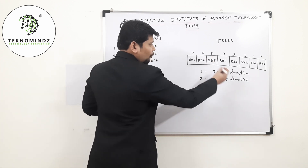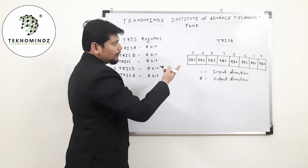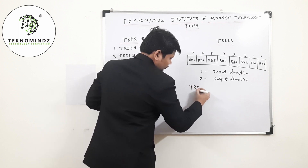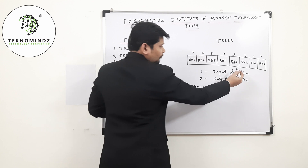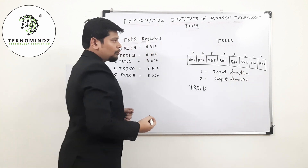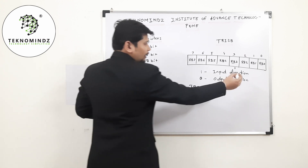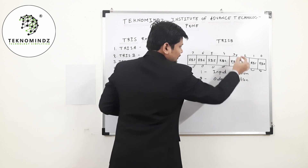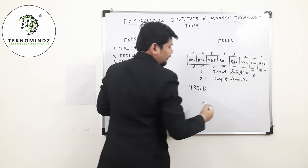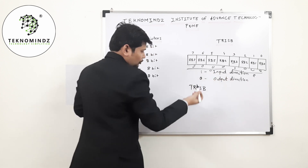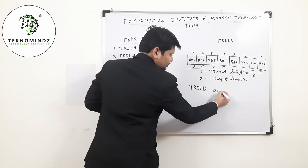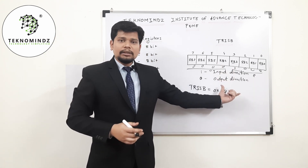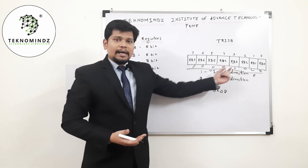Now, if I take an example where I need to configure port B and the RB3 pin as input, I can write TRISB and give logic 1 at that bit position, and the rest of the pins will be 0. This gives 8 in hexadecimal and 0 for the rest, so TRISB will be 0x08. With the help of the TRISB register, you have configured RB3 as the input direction.